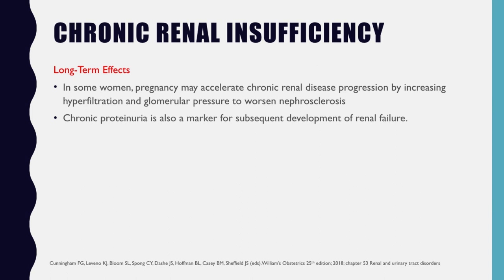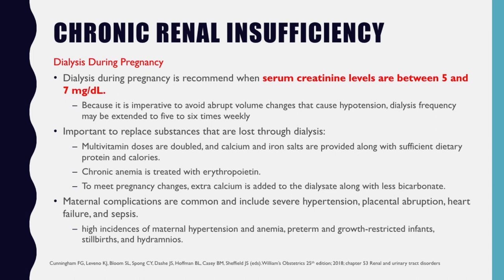For some women, pregnancy may accelerate chronic renal disease progression by increasing hyperfiltration and glomerular pressure to worsen nephrosclerosis. Chronic proteinuria is also a marker for subsequent development of renal failure. Regarding dialysis during pregnancy: dialysis is recommended when serum creatinine levels are between 5 and 7 mg/dL. Because it is imperative to avoid abrupt volume changes that cause hypotension, dialysis frequency may be extended to 5 to 6 times weekly. It is important to replace substances lost through dialysis — multivitamin doses are doubled, calcium and iron salts are provided along with sufficient dietary protein and calories, and chronic anemia is treated with erythropoietin.